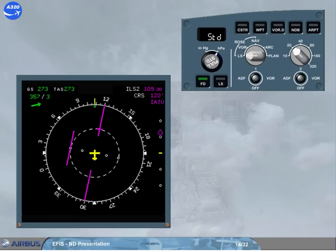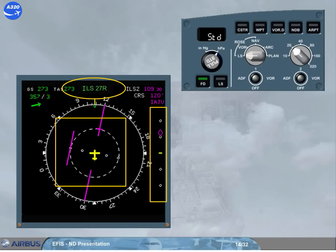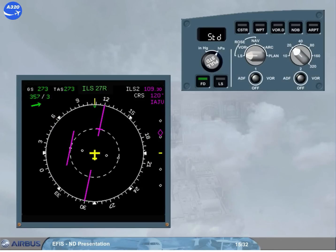The ROSE ILS mode is a raw data mode, providing standard localizer and glide slope deviation bars. Note, the full runway name of the MCDU selected approach will be displayed if, in the related FMS phase, the along track distance to destination is less than 250 nautical miles. Other information is displayed to assist you. An ILS course pointer, ILS information.